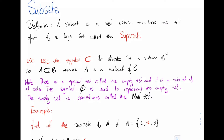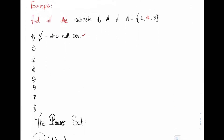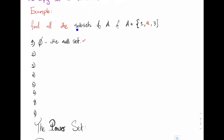Let's jump into an example. The question says: find all the subsets of A, if A = {1, a, 3}. Notice I start off this example by first writing down the null set. Once we're asked to write down all the subsets of a set, we should always start with the null set, then start with sets containing only one element.